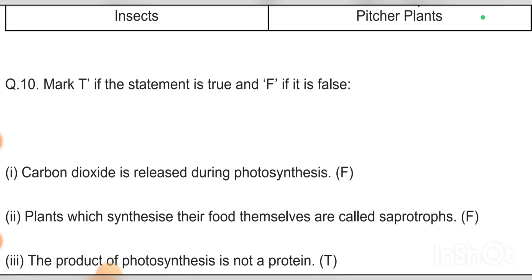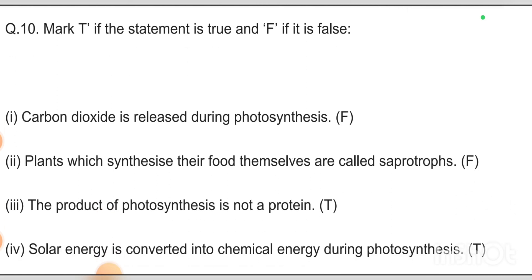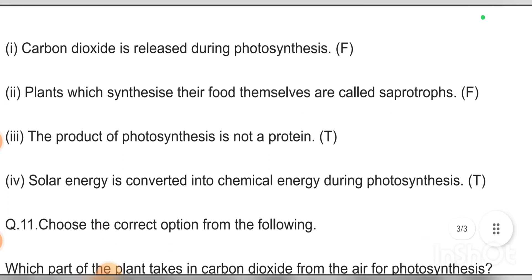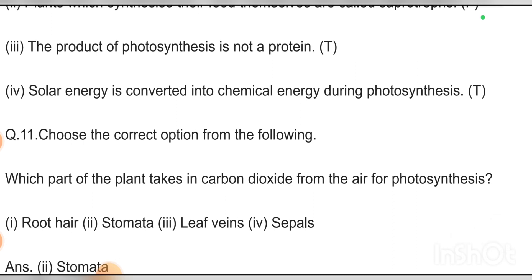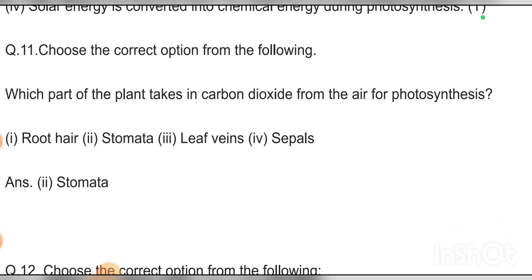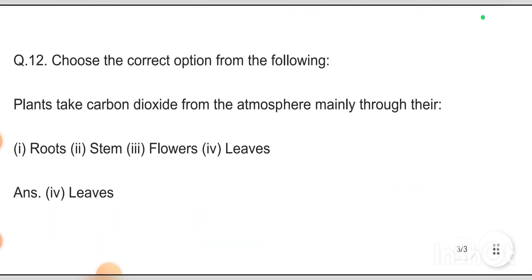Mark T if the statement is true and F if it is false. Carbon dioxide is released during photosynthesis — answer: False, oxygen is released. Plants which synthesize their own food are called saprotrophs — answer: False. Solar energy is converted into chemical energy during photosynthesis. Which part of the plant takes in carbon dioxide from the air for photosynthesis? Answer: stomata. Plants take carbon dioxide from the atmosphere mainly through stomata.